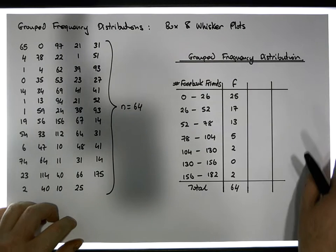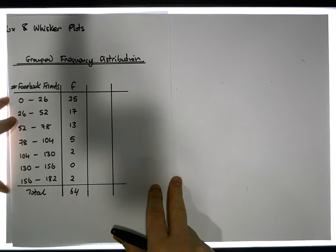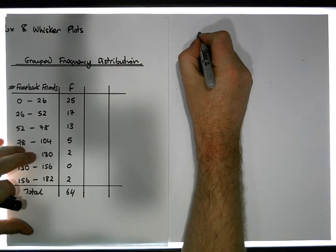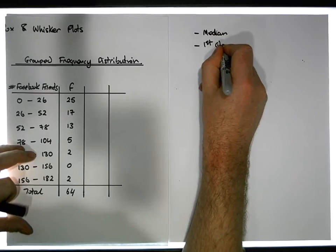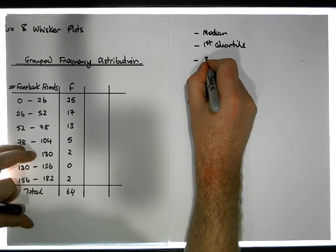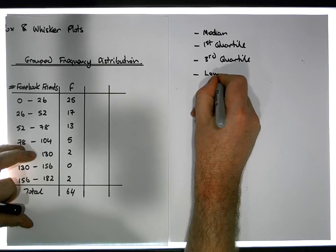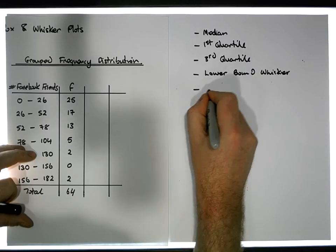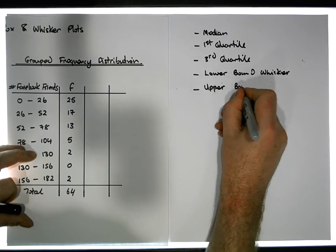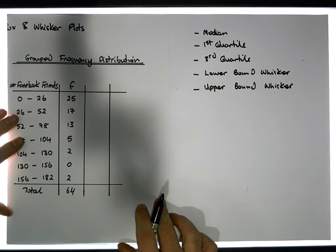Now we'd like to construct a box and whisker plot. As defined previously, it is a five-point summary. The five important points we need to calculate are: the median, the first quartile, the third quartile, the lower bound whisker position, and the upper bound whisker position. Let's start this process by calculating the median first.